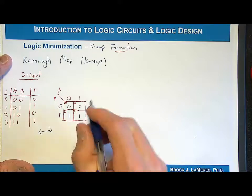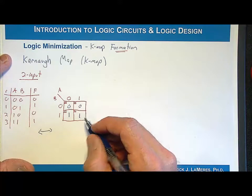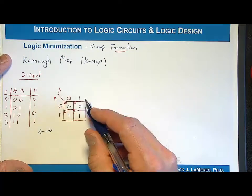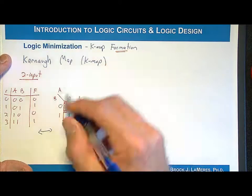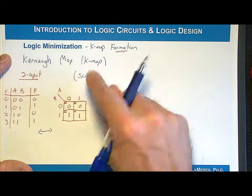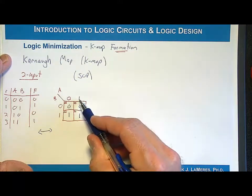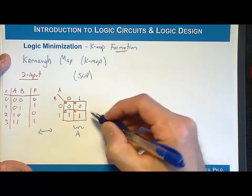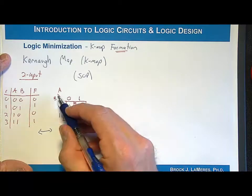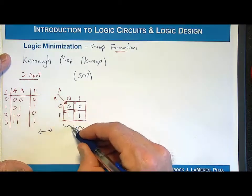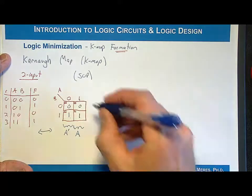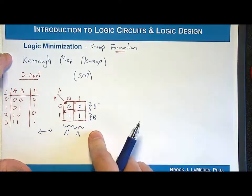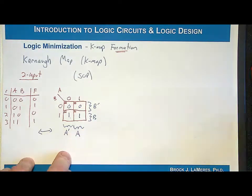When we start looking at which variables are important in the final logic expression, we can label the rows and columns corresponding to whether inputs are 1 or 0. For a sum of products, when the input variable is a 1, we include it uncomplimented. So the column where A is 1 is labeled A, and the column where A is 0 is labeled A-naught. Similarly, the row where B is 0 is labeled B-naught, and the row where B is 1 is labeled B.